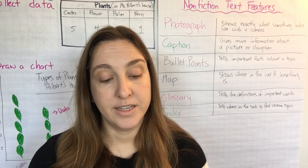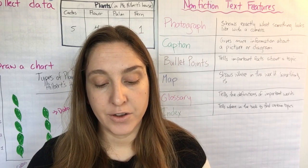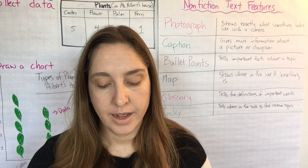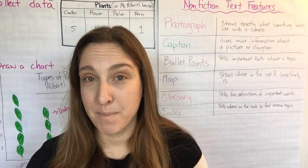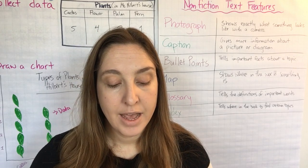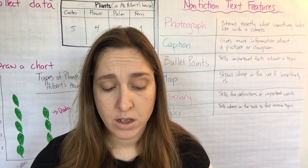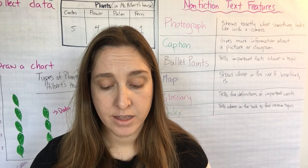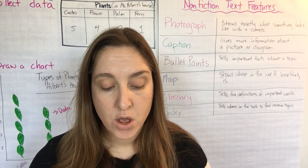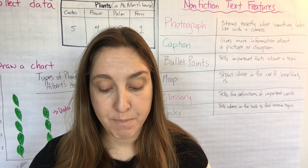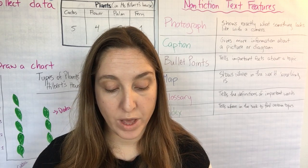Wolf families are called packs. The pack consists of a mother and father called the alpha pair. Alpha pair — I've never heard that word before. I'm going to put it in my brain and come back to it in a minute. And their offspring — the alpha female and alpha male are the leaders of the pack. The pups usually stay with the pack for two or three years. When they are grown, one of them might become the pack leader, or the alpha pair might drive them away.